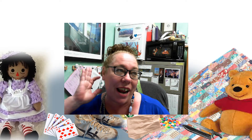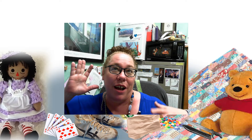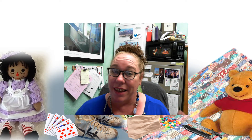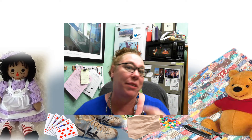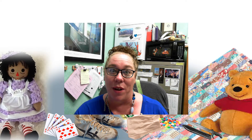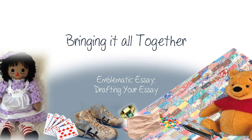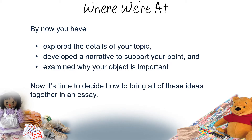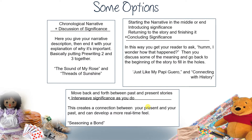Hey, so here we are. You've done three pre-writings and now it's time to start thinking about taking this stuff and putting it together in an essay. Your first pre-writing was exploring the details of your topic. You've developed a narrative to support your point and you've examined why your object is important. Now you've got to decide how they all come together.